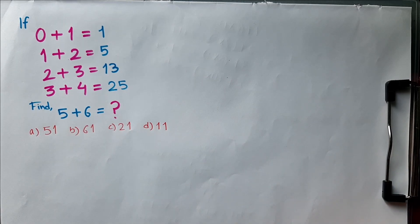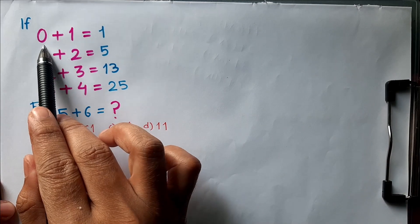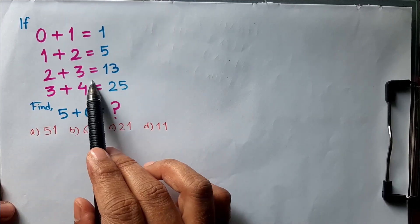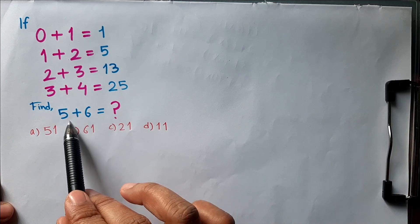Hello guys, welcome to my channel. Let's solve this reasoning problem. Given: if 0 + 1 = 1, 1 + 2 = 5, 2 + 3 = 13, 3 + 4 = 25, we need to find the value of 5 + 6.